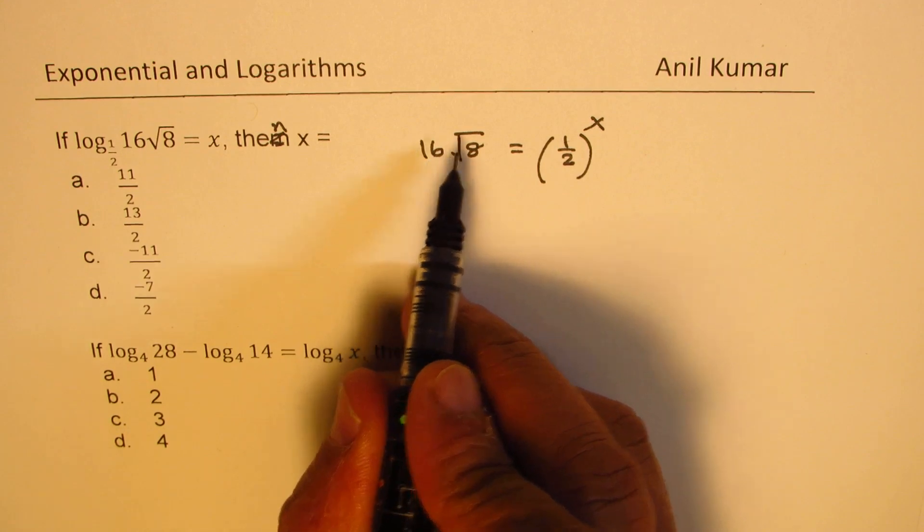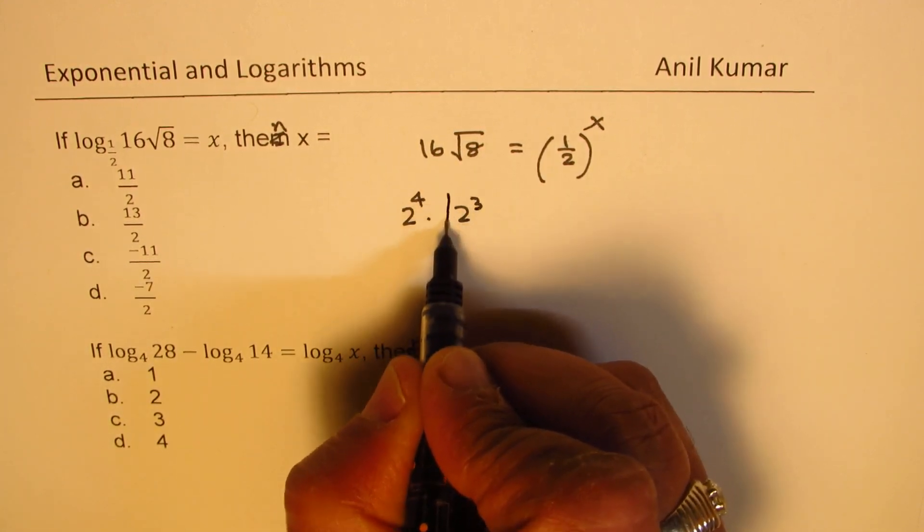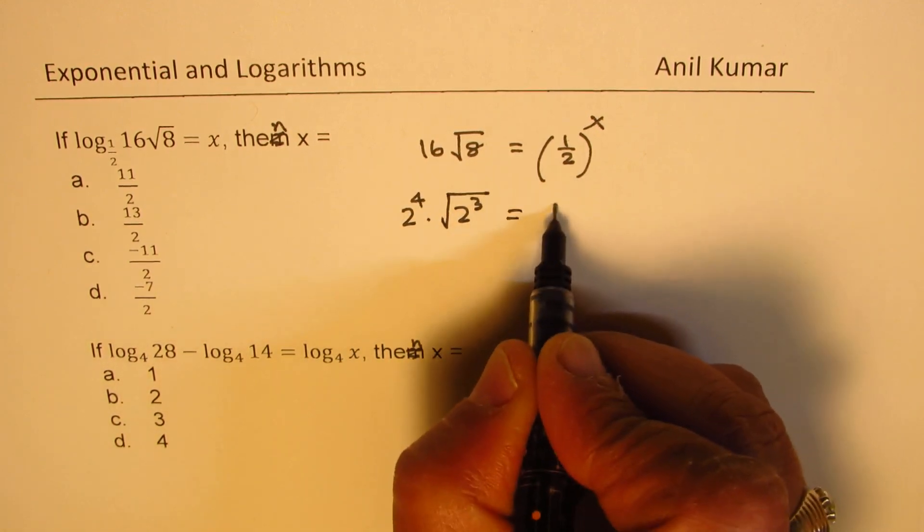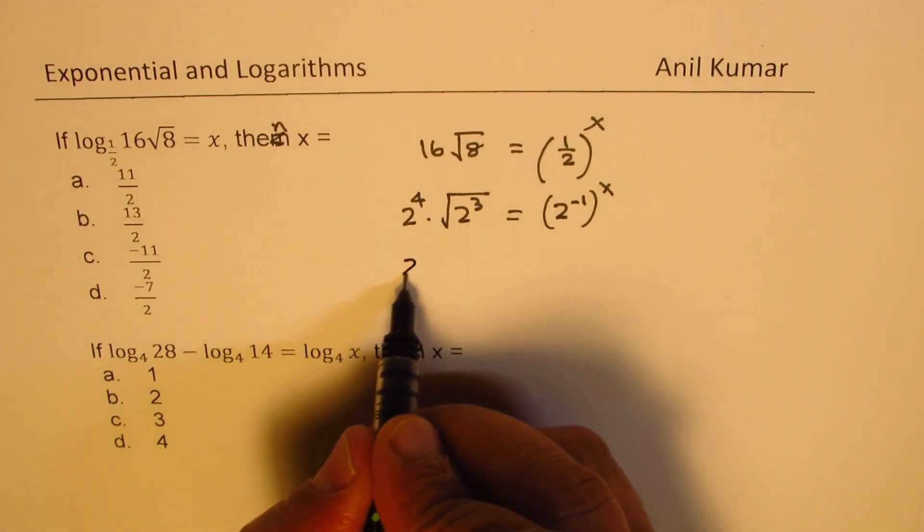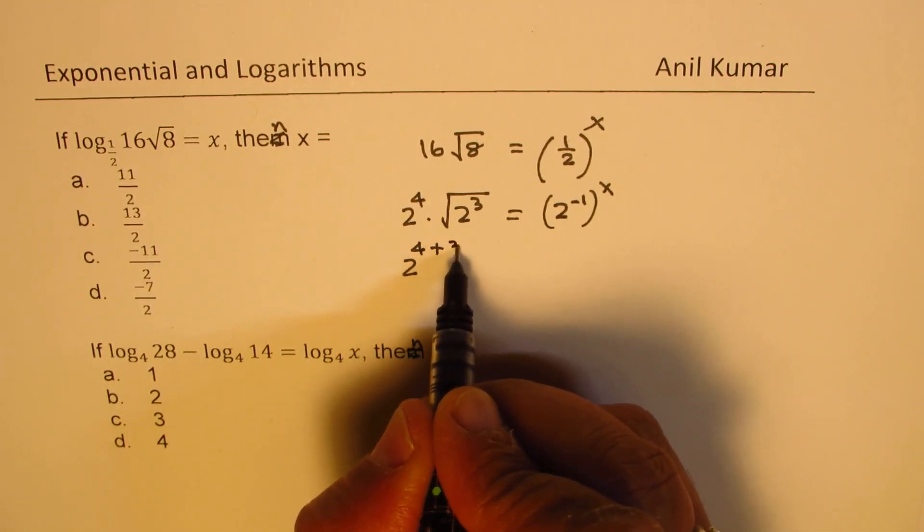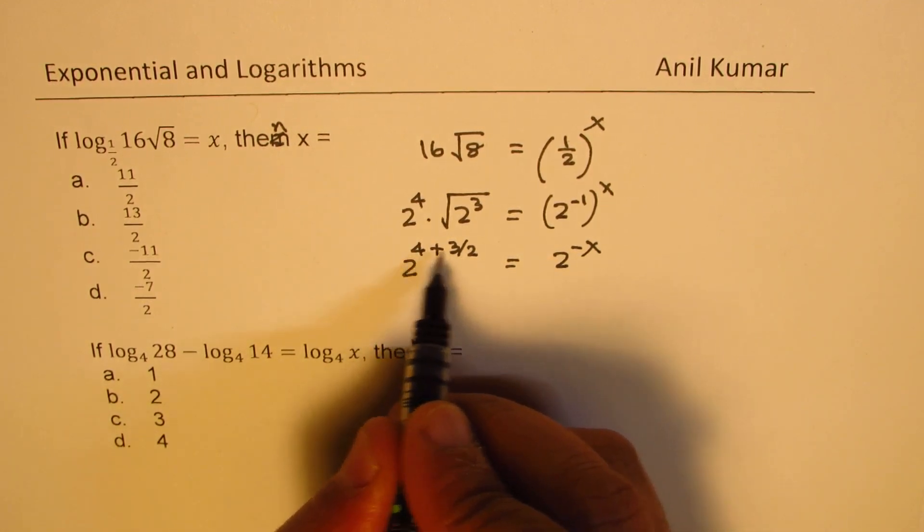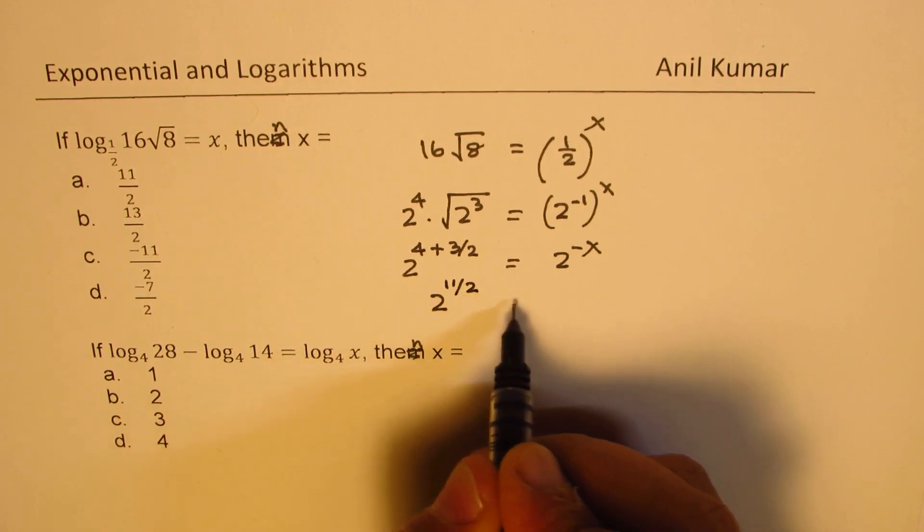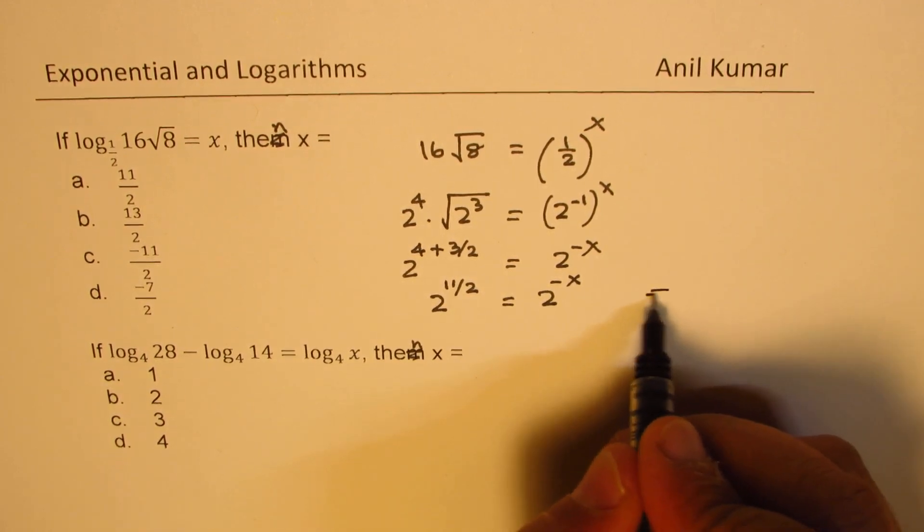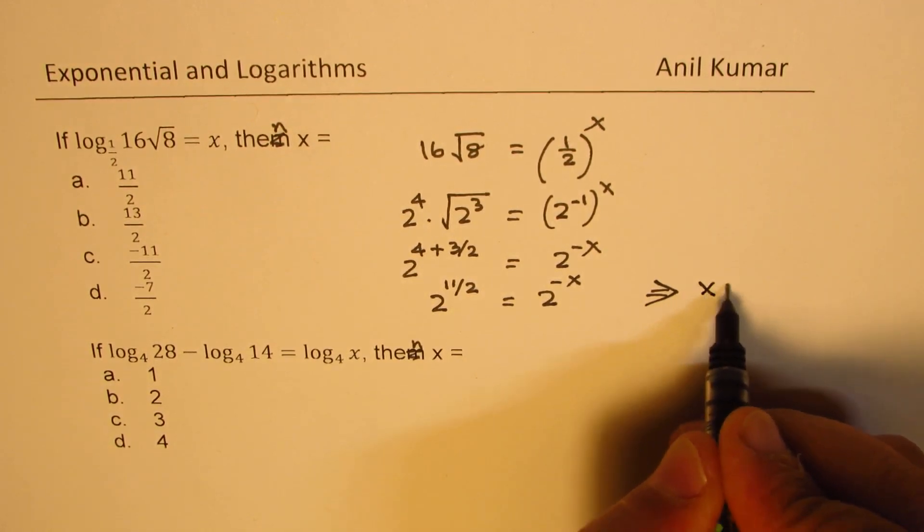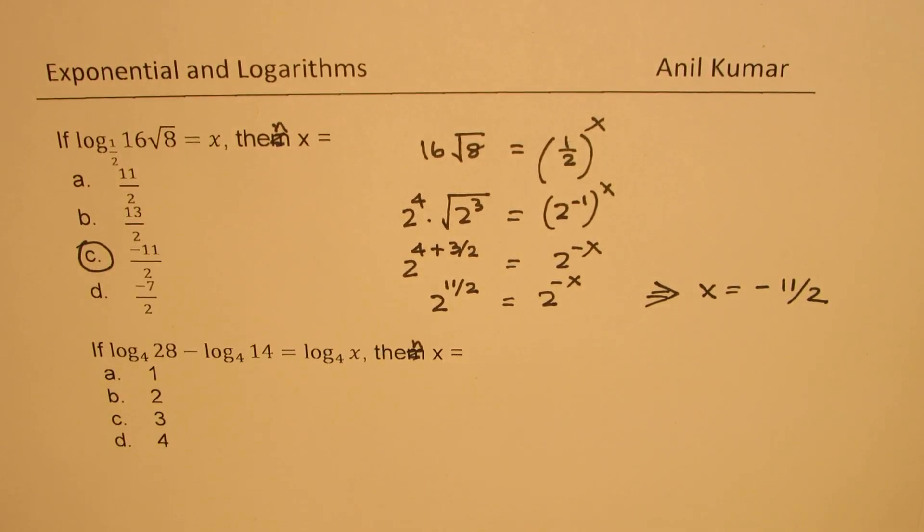Now this is 2 to the power of 4. That is 2 to the power of 3 square root. And here we have 2 to the power of minus 1 to the power of x. Now we could write this as 2 to the power of 4 plus 3 over 2 equals 2 to the power of minus x. So that implies that x is equal to minus 11 over 2. Option c is the correct option.